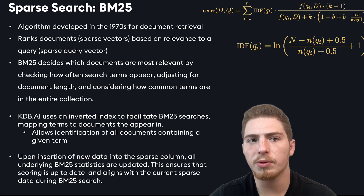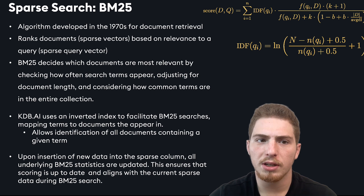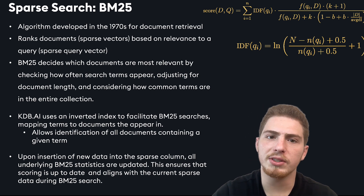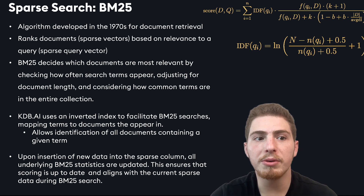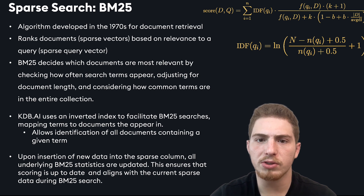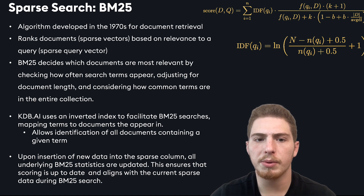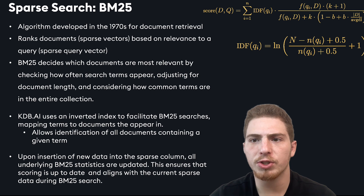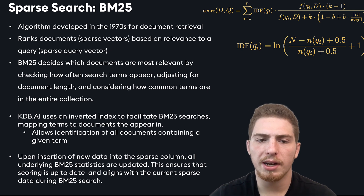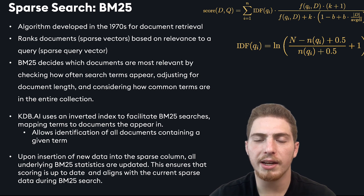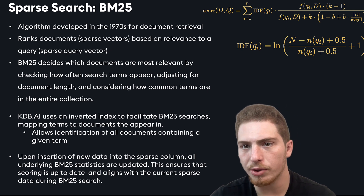Sparse search is typically done with the BM25 algorithm. It's an algorithm that was developed in the 70s for document retrieval, shows great performance, and ranks sparse vectors based on a sparse query vector. BM25 decides which documents are most relevant by checking how often search terms appear, adjusting for document length, and considering how common terms are in the entire collection.